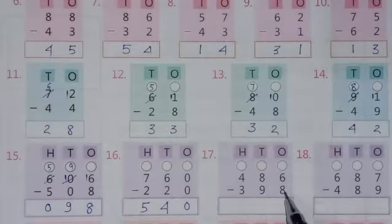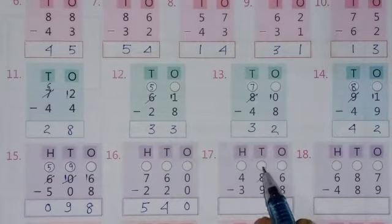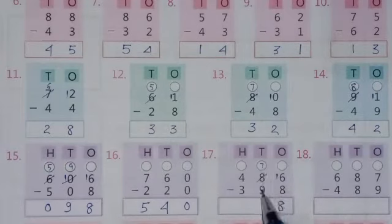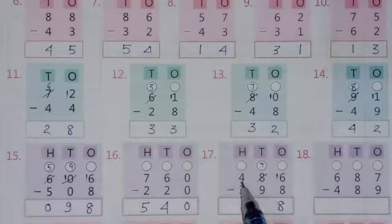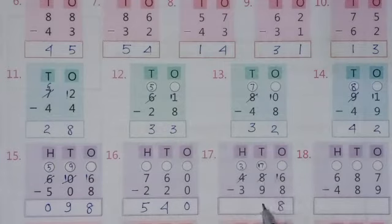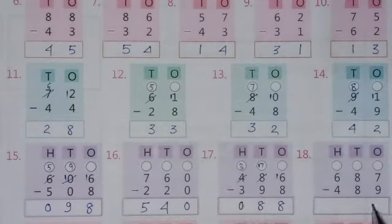Here 6 minus 8 is not possible, so borrow from this digit — this will become 7 and here will be 16. 16 minus 8 equals 8. Then 7 minus 9 is not possible, so borrow from this digit — this will become 3 and here will be 17. Now 17 minus 9 equals 8. 3 minus 3 equals 0.